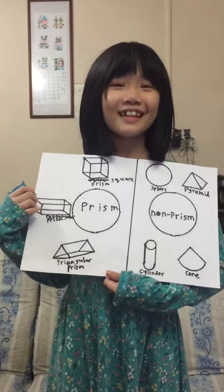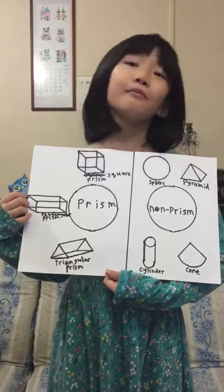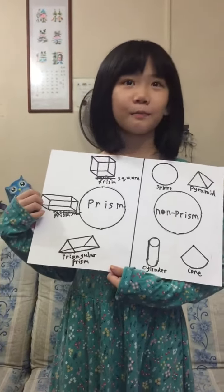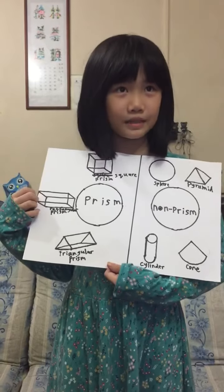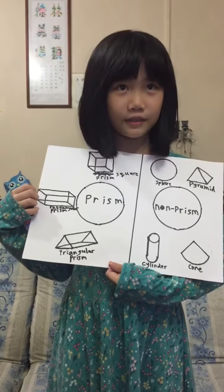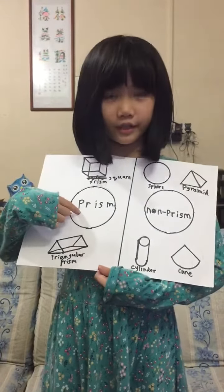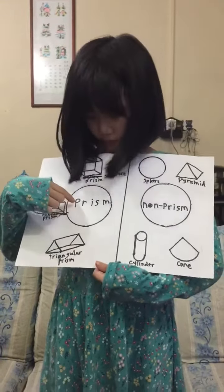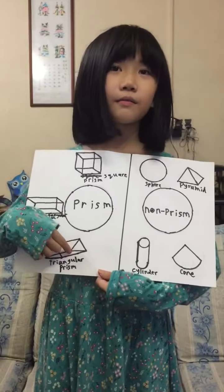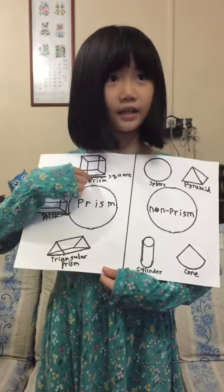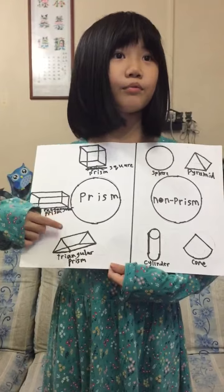Hi, today I'm going to tell you guys about prisms and non-prisms. Here are some examples of prisms: triangular prism, square prism, and rectangular prism.